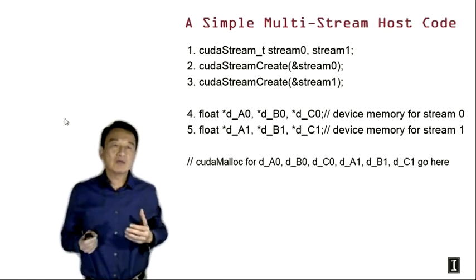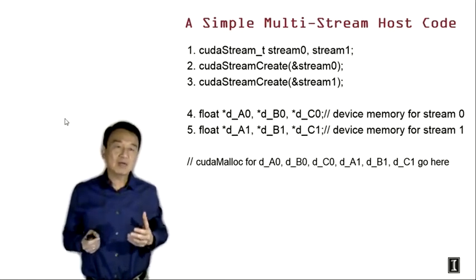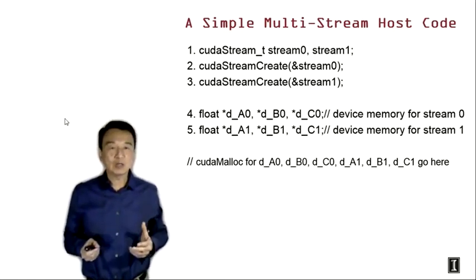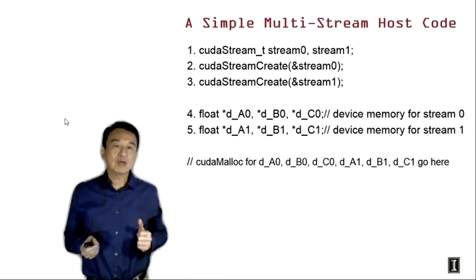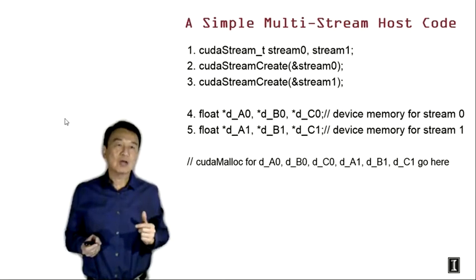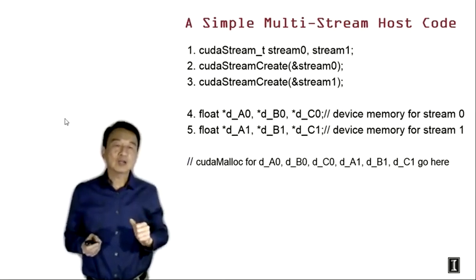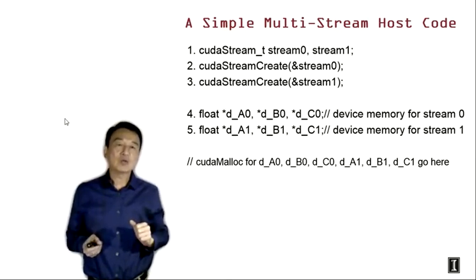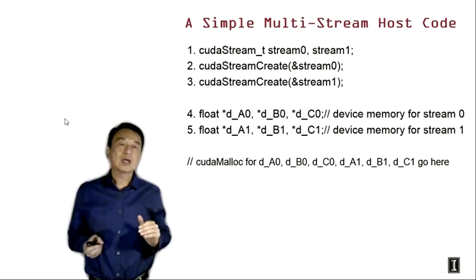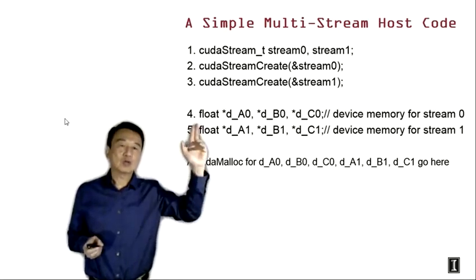Now that we have discussed the concept of CUDA streams in the previous lecture, we're ready for the practical use of streams in a CUDA host code. Here we show the declaration of stream handles. There's a special type cudaStream_t, and we can declare two handles or pointers to the streams, calling them stream 0 and stream 1.